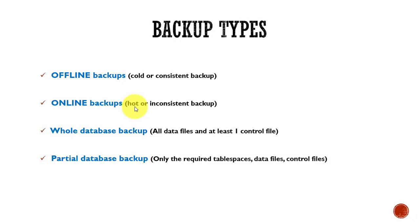People refer to these as inconsistent backups also. The reason is when the database is open and there are users performing a lot of transactions, there is no guarantee that the data files are synchronized with the control files. We know a system change number is recorded in the data files and the control files.